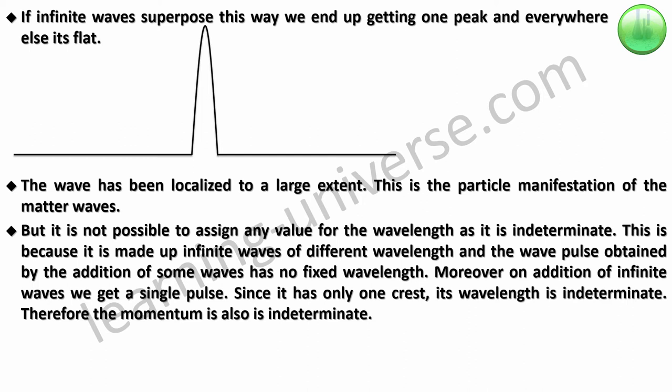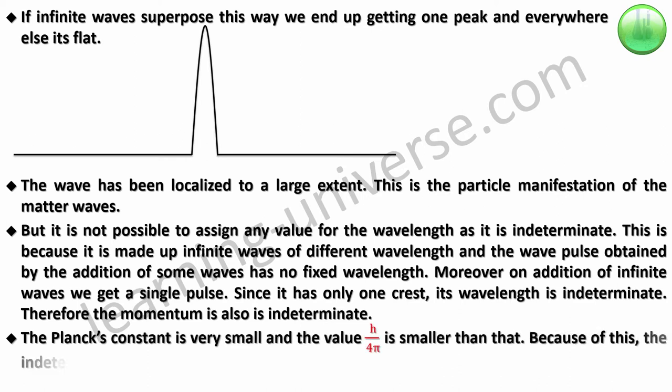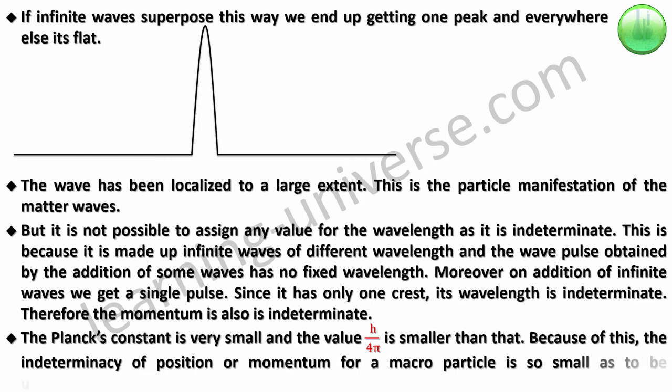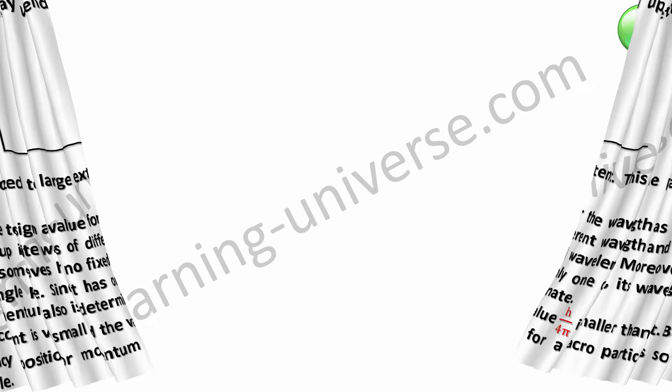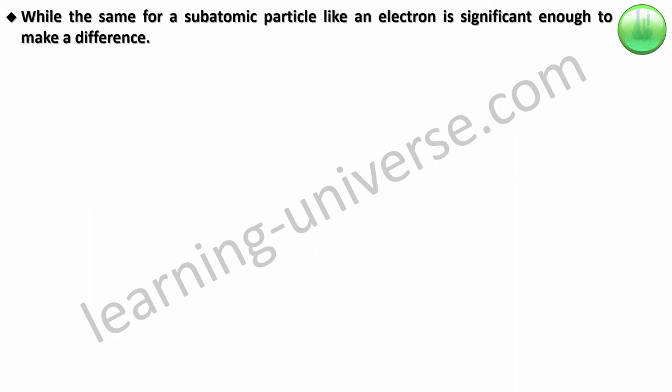Now, the reason we do not observe this kind of situation for macroparticles is because when we say H over 4π, H is so small that you will not be able to measure this kind of Heisenberg's uncertainty principle for macro objects. The indetermination of position and momentum of a macroparticle is so small as to be unnoticeable, while the same for a subatomic particle like an electron is significant enough to make a difference. And now I'm going to show you another video where we are going to talk about the same stuff but with some kind of an animation that will probably make it clear to you.